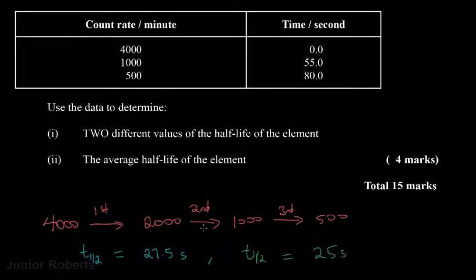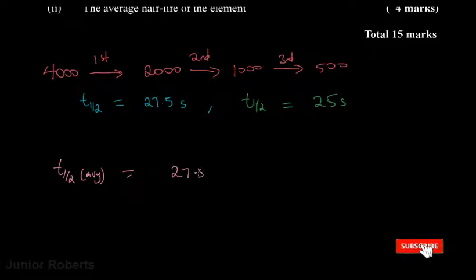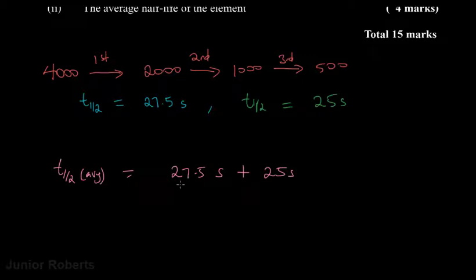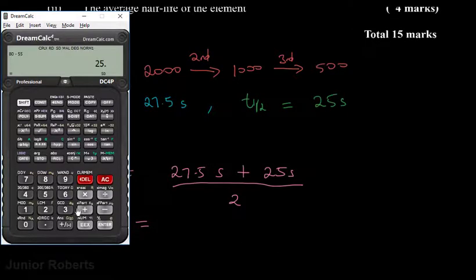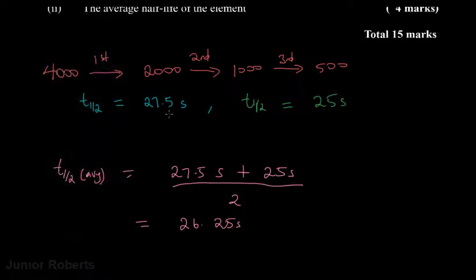So these are the two values for half-life. Now we are to determine the average half-life for the element. The average half-life equals (27.5 + 25) divided by 2. Calculating: 25 plus 27.5 equals 52.5, divided by 2 gives us 26.25 seconds. That will be our final answer.